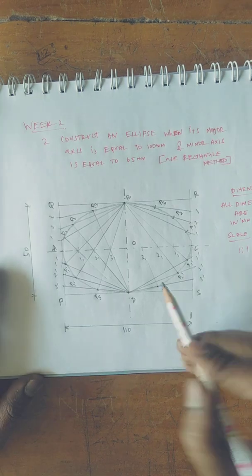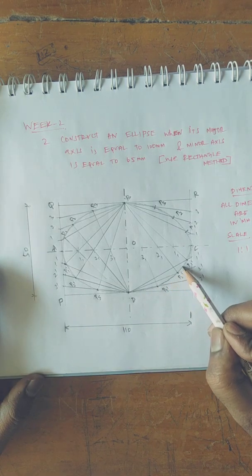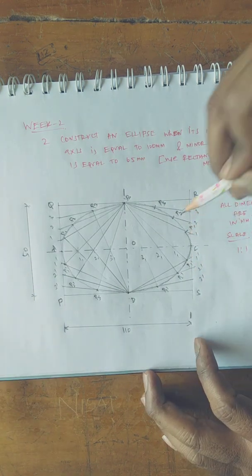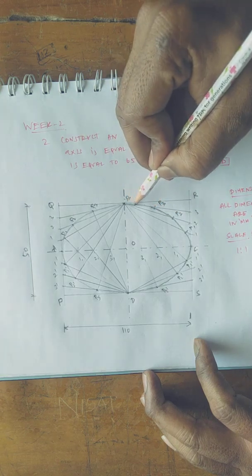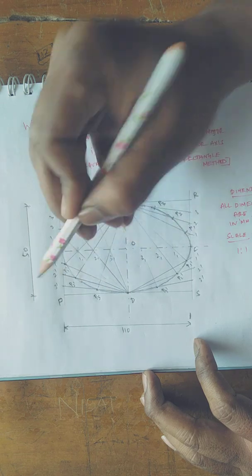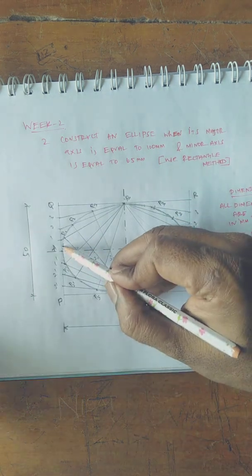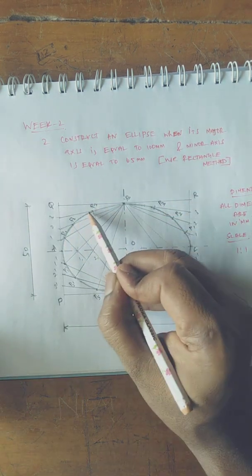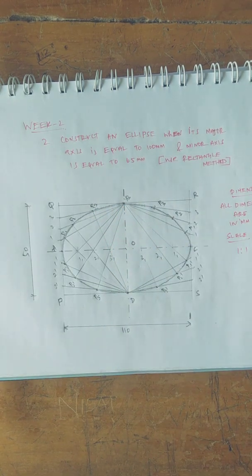You can darken it. You must use a thin pencil instead of the HB pencil. That's it. Thank you.